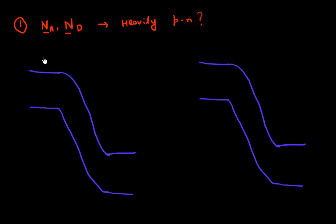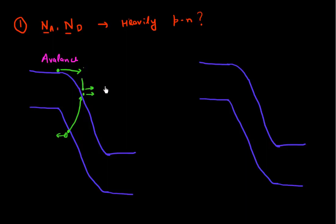When thinking about the avalanche process, an electron gains enough energy in the field before scattering so that it can free an electron from the valence band and bring it up to the conduction band, generating a hole in the process. These two electrons then need to gain enough energy before they scatter again. The energy gain ΔE between two scattering events — over a distance less than the mean free path — must be high enough to generate this electron-hole pair.